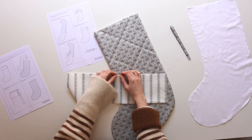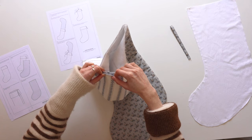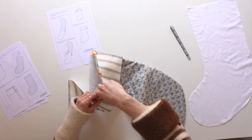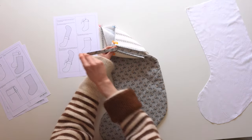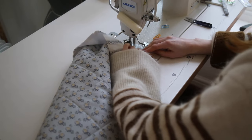Now we're going to attach the cuff to the stocking. Start by finding the top center notch on your cuff and we're going to line that up to the edge of the stocking. Pin it on all the way around the top and then we're going to stitch around that with a one centimeter seam allowance. And whilst we're at the sewing machine we're also going to stitch on the hanging loop on the opposite side.